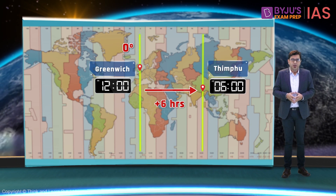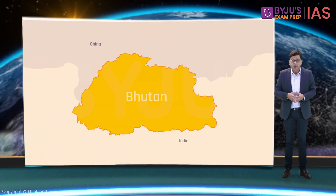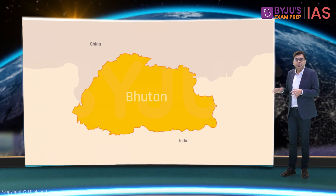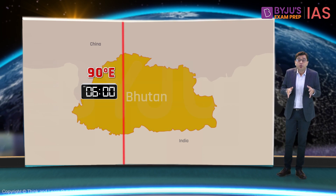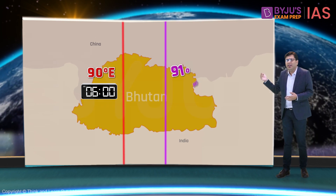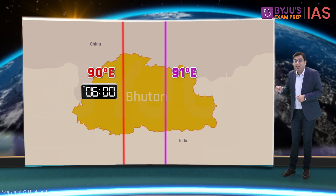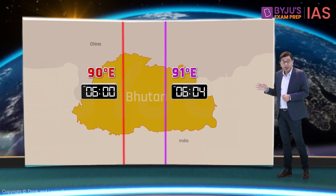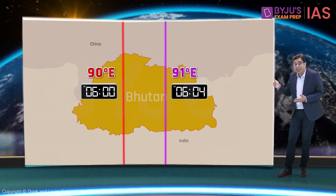Now we have understood what local time is, but local time cannot be used for practical purposes. In our example we calculated Thimphu's local time at 90 degrees East. Now if you ask about the local time of a place very close to Thimphu — say, 91 degrees East — going by the same process, the local time comes out to be 6:04 PM. You can see the problem: local time changes with even a slight change in longitude.